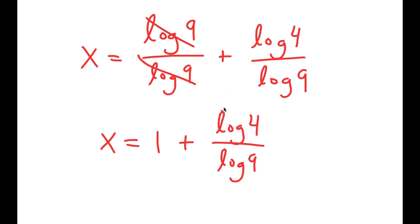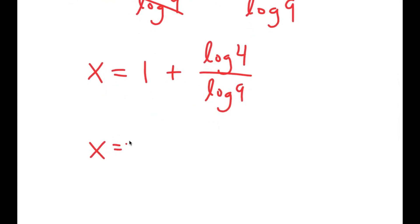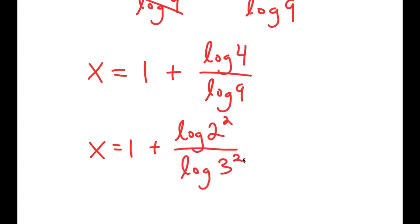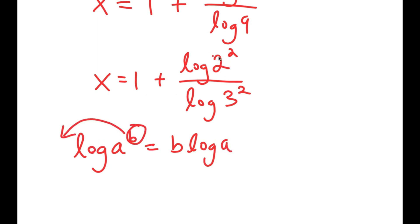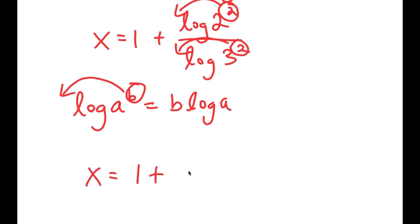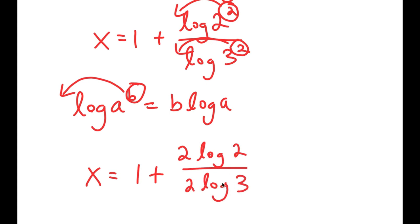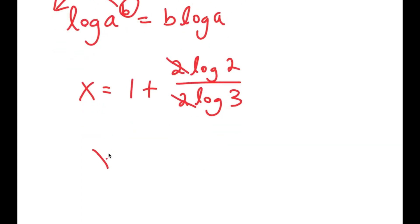From here, I'm going to simplify by rewriting log 4 as log of 2 squared, since 4 equals 2 squared, and log 9 as log of 3 squared. Using the power property — log a to the power of b equals b times log a — I move the exponents to the front. So I get x is equal to 1 plus 2 times log 2 over 2 times log 3. The twos cancel, giving x is equal to 1 plus log 2 over log 3.